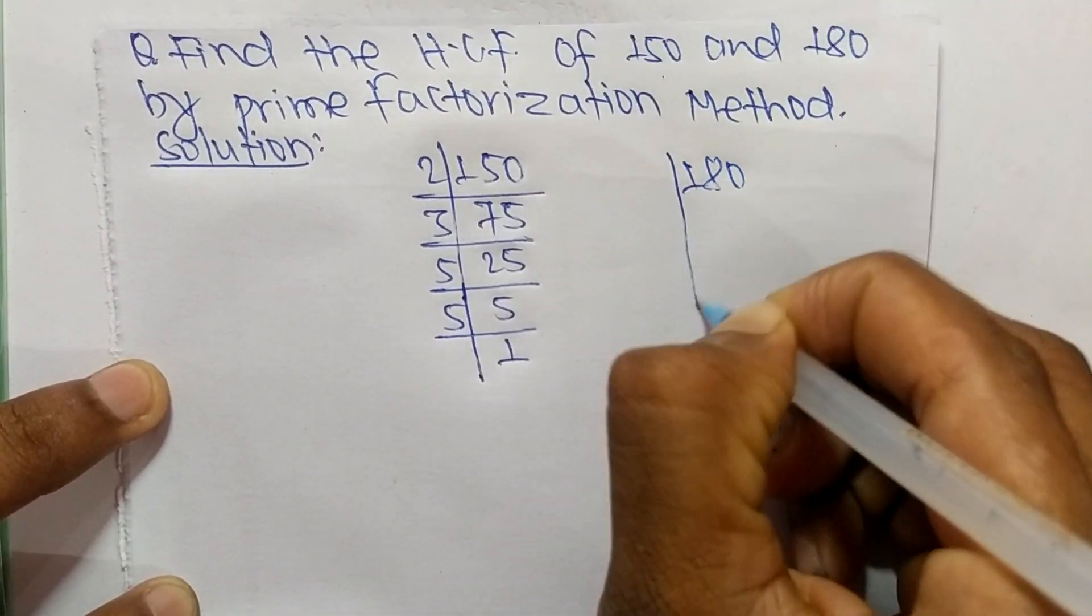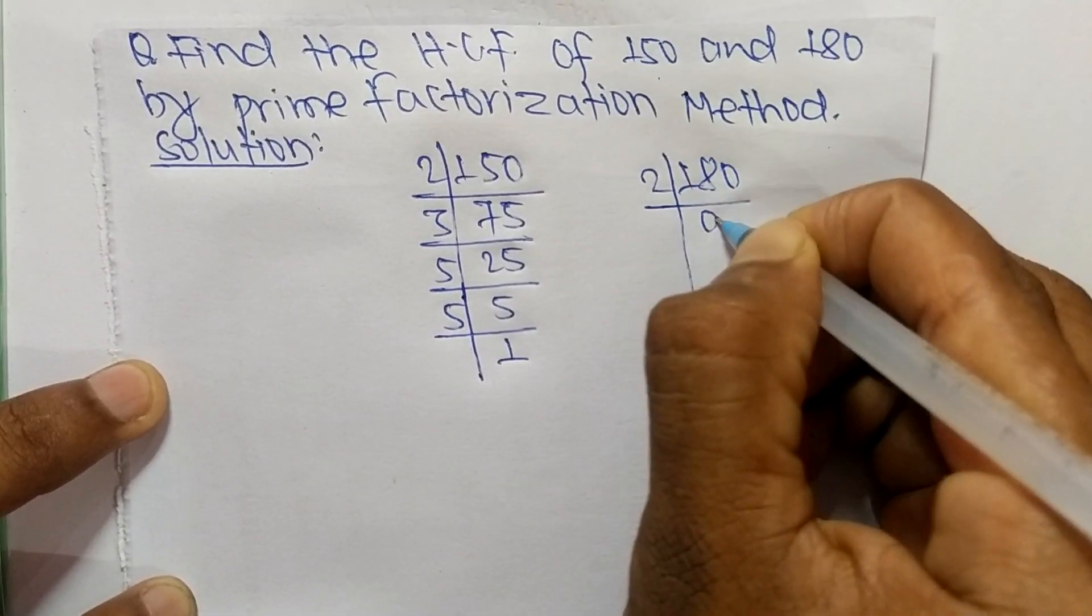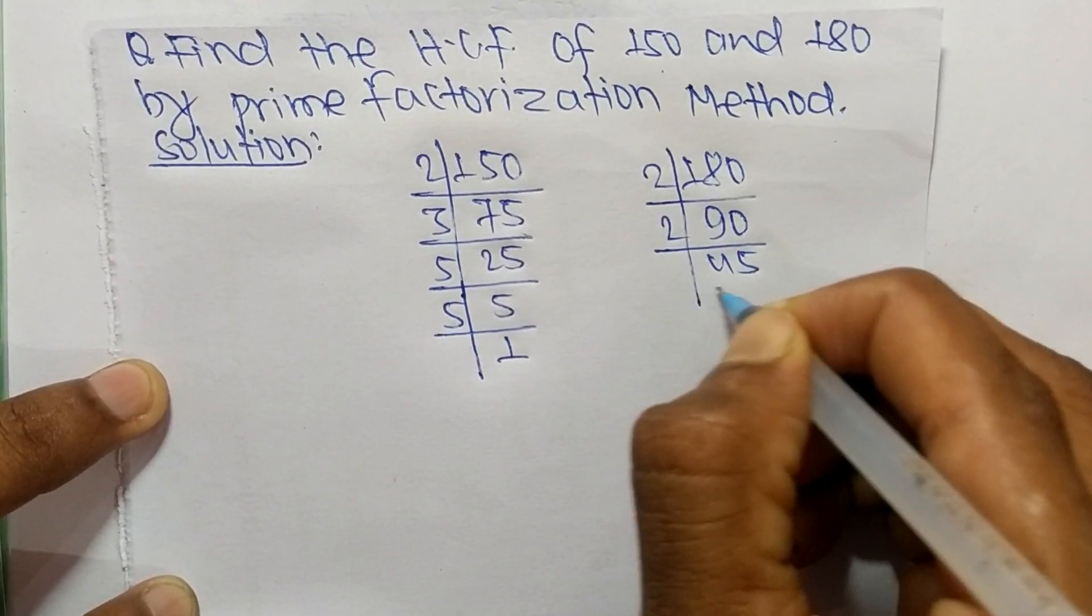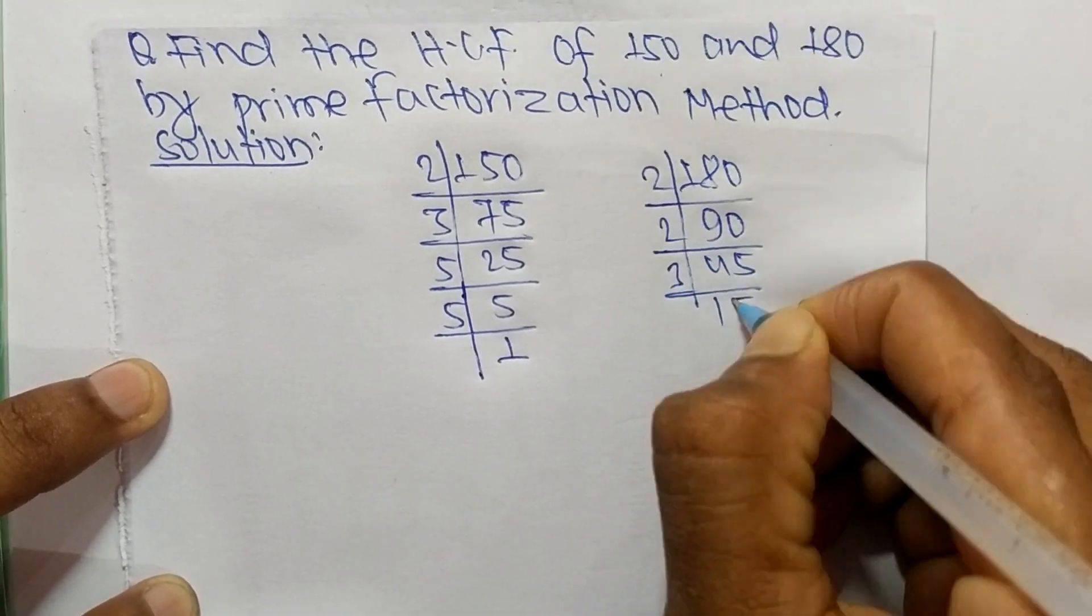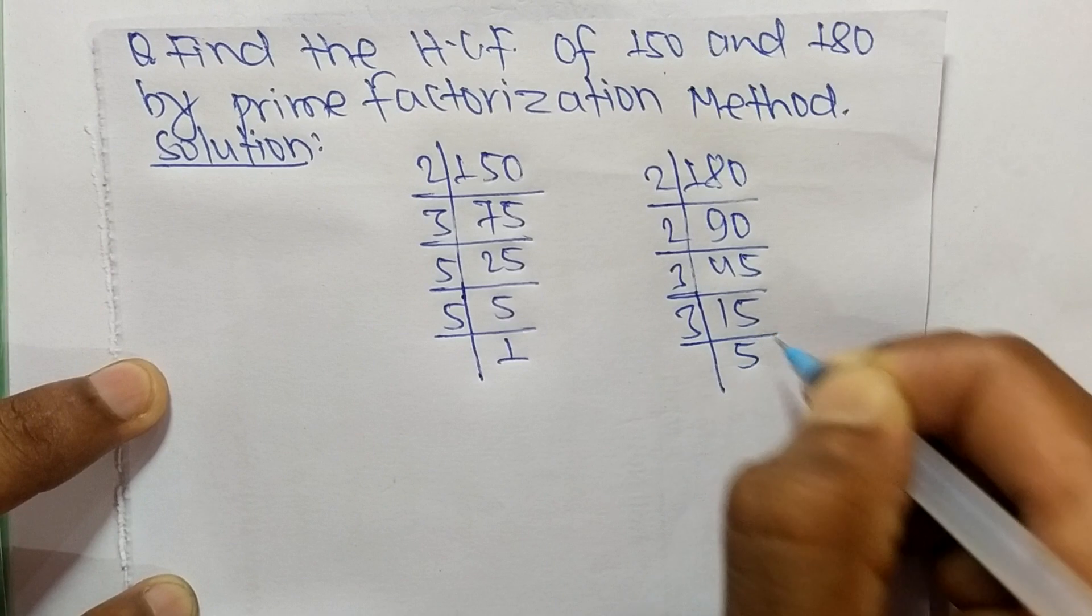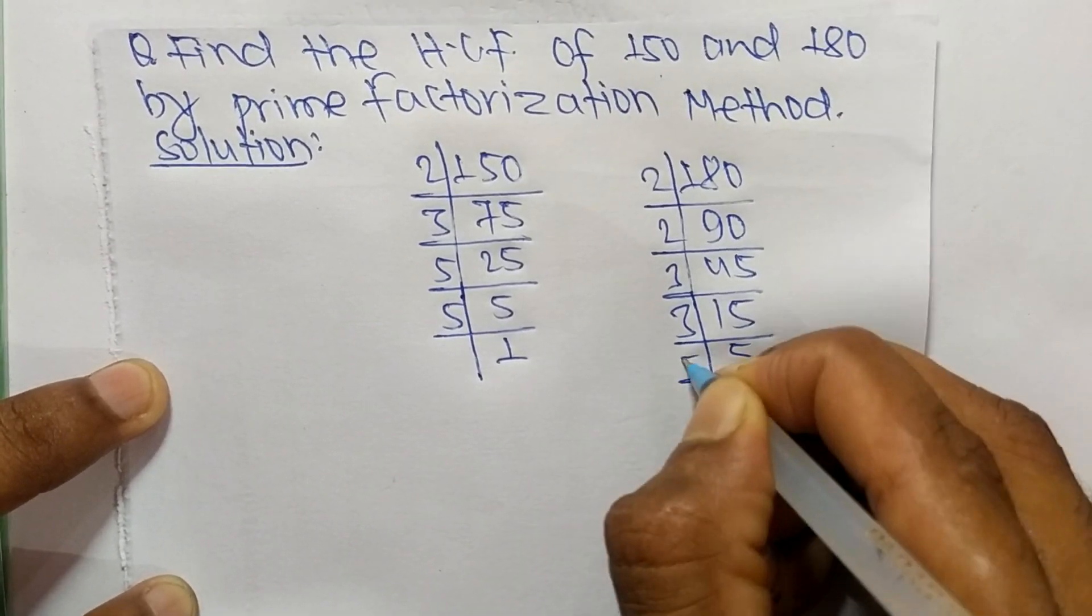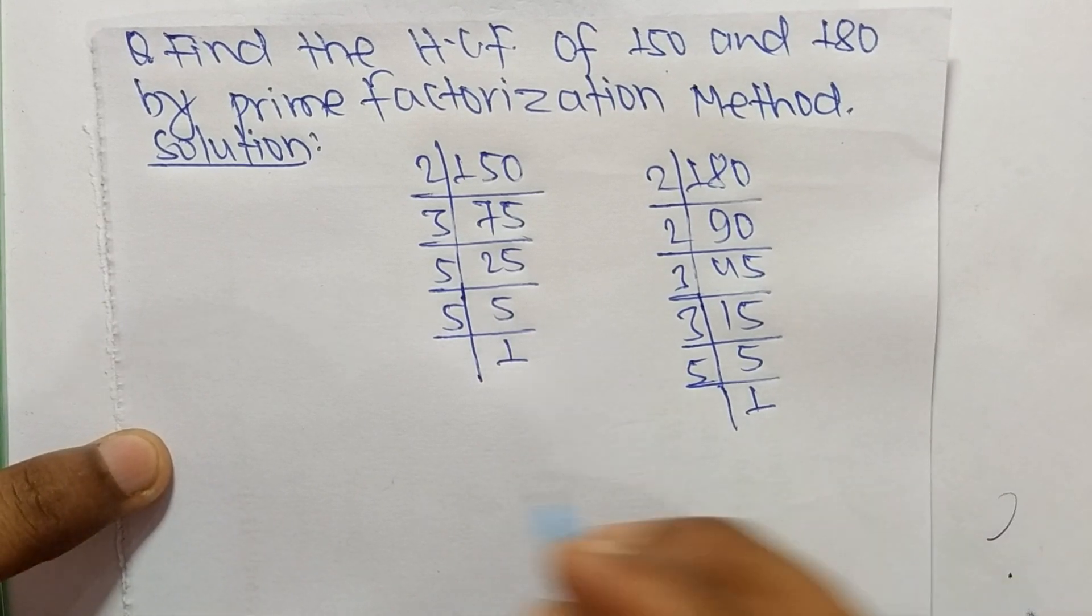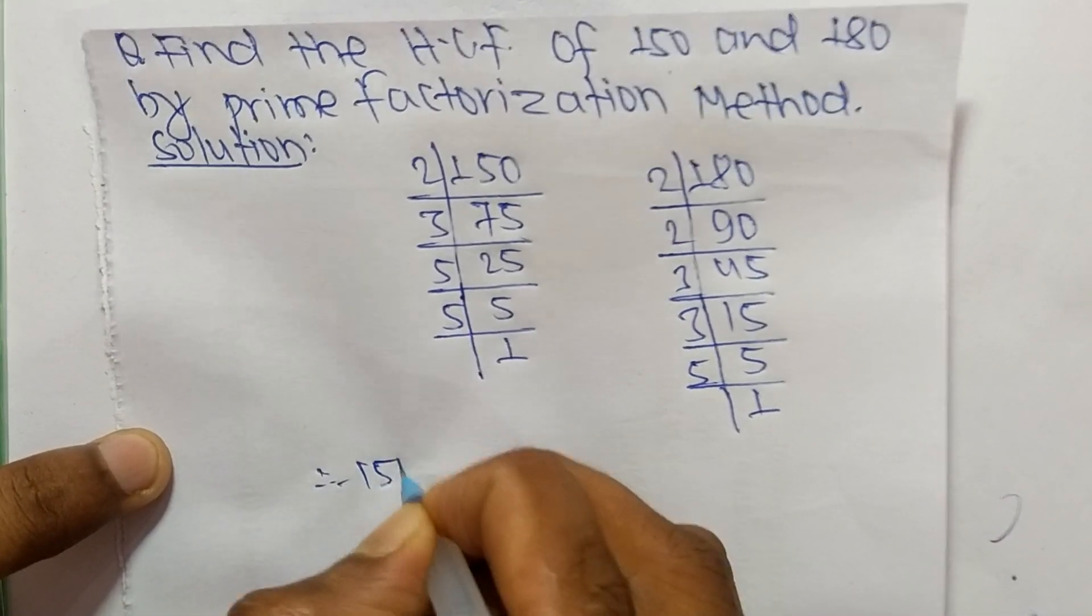The prime factors of 180 are: 2 times 90 equals 180, 2 times 45 equals 90, 3 times 15 equals 45, 3 times 5 equals 15, and 5 times 1 equals 5.